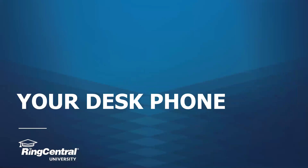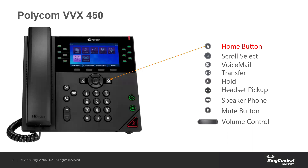First, we'll be talking about your phone. This is one of the models — the Polycom VVX 450. Some of you may have the 350 instead. They're very similar; the only difference is there are a few fewer line keys on the 350, but usability-wise and button-wise they're all going to be the same. I'm going to go over all the buttons on the phone and then how to do a few different processes like transferring a call, conferencing, and checking your voicemail.